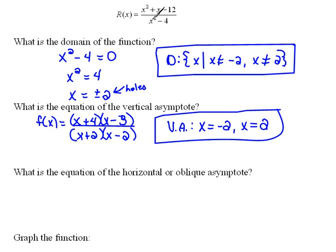Remember, that's determined by the powers of x. Because we have the same power of x in the numerator and the denominator, that tells us that we're going to have a horizontal asymptote at the ratio of the coefficients.